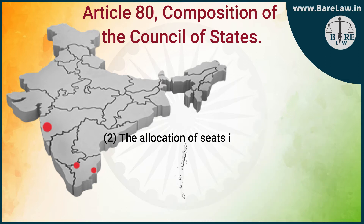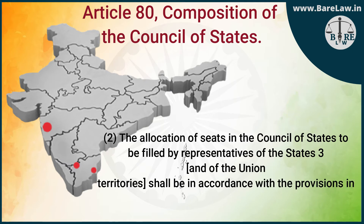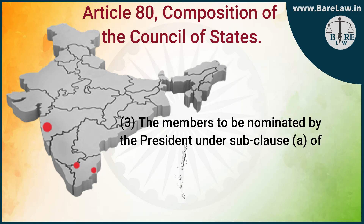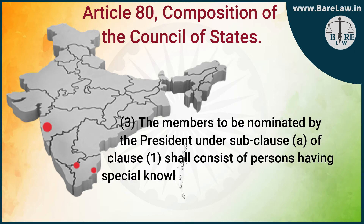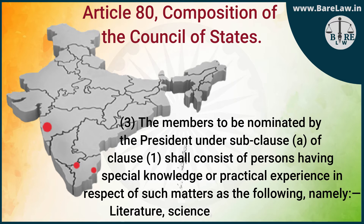Sub-Clause (2): The allocation of seats in the Council of States to be filled by Representatives of the States and of the Union Territories shall be in accordance with the provisions in that behalf contained in the Fourth Schedule. Sub-Clause (3): The Members to be nominated by the President under Sub-Clause (a) of Clause (1) shall consist of persons having special knowledge or practical experience in respect of such matters as the following, namely: literature, science, art and social service.